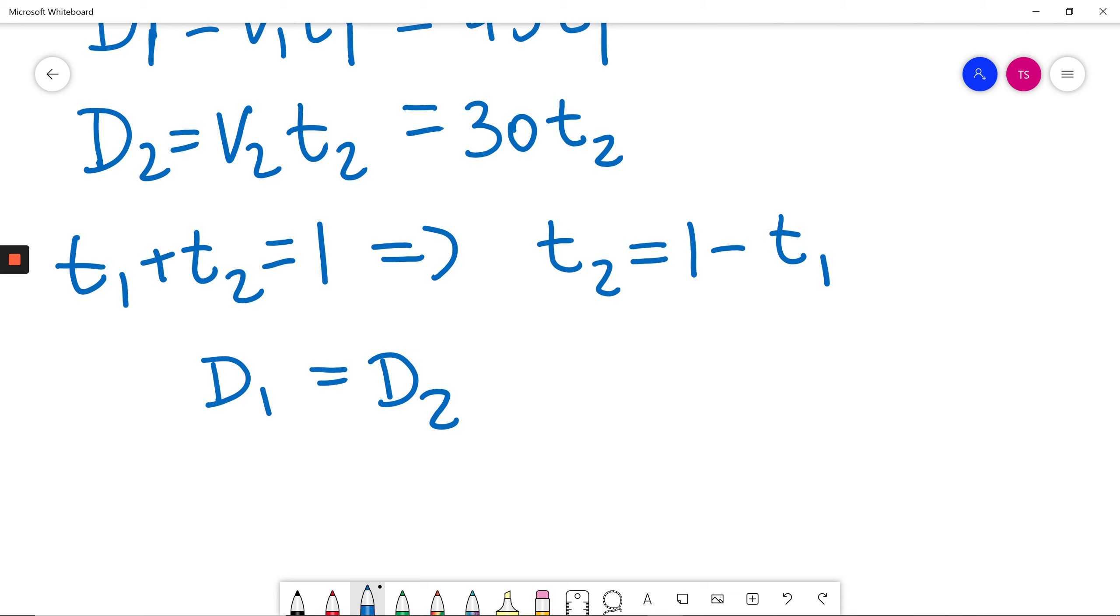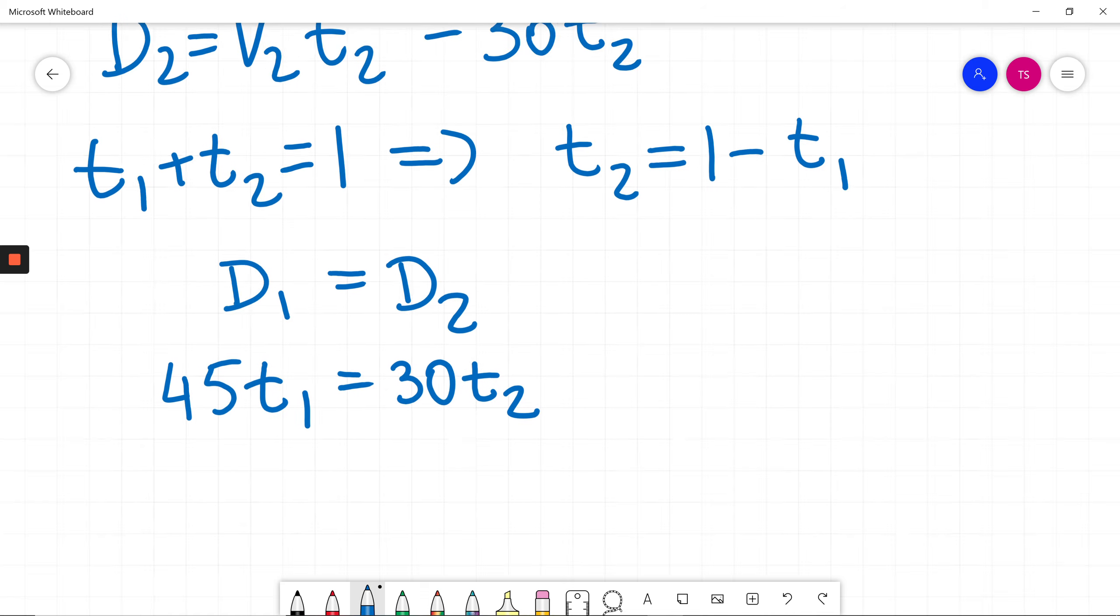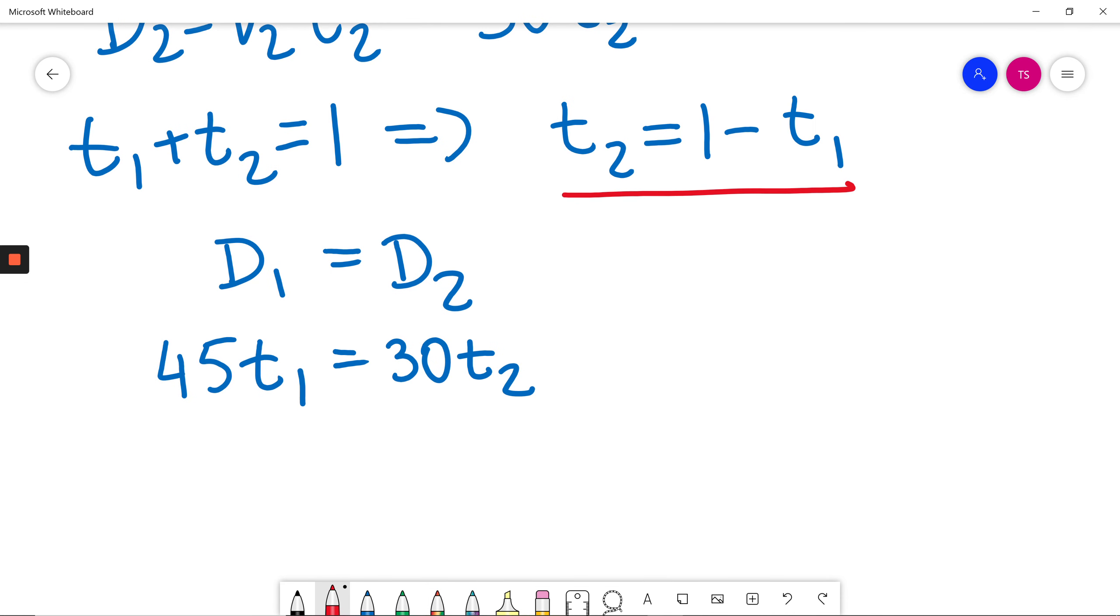so I know that distance 1 will be equal to distance 2. So 45 T1 is equal to 30 T2. So 45 T1 is equal to 1 minus T1.